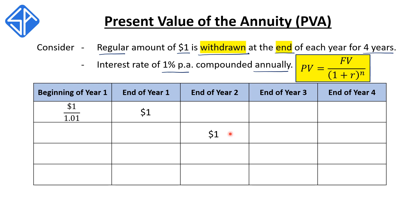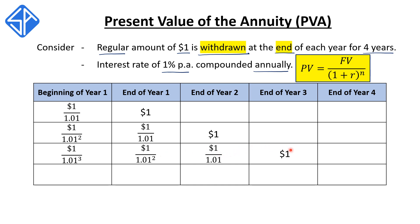At the end of year two, we want to be able to withdraw another $1. So we need to invest an amount at the beginning of year one, and this amount is $1 divided by 1.01 squared — less than the first amount, because this amount has two years to compound to bring it to $1. At the end of year three, we want another $1, so we need to invest $1 divided by 1.01 cubed at the beginning of year one, because it has three years to compound. And for the last $1 at the end of year four, we need to invest $1 divided by 1.01 to the four, so that it has four years to compound to take it to $1.